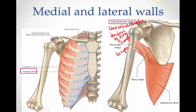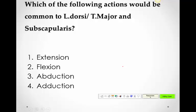Looking at the question: which actions would be common to latissimus dorsi, teres major, and subscapularis based on how they are oriented? They all go from medial to lateral — so when they shorten, they will cause adduction. That is the common action. They will have other actions as well, which we'll see later.